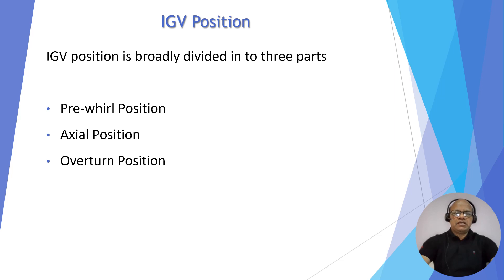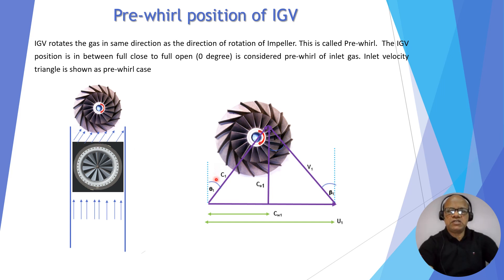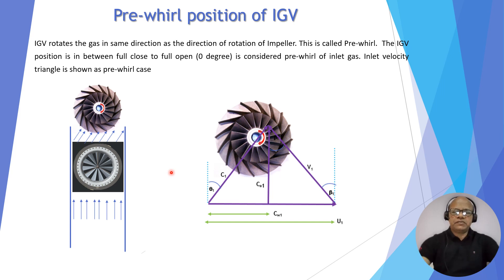IGV position is broadly divided into three parts: pre-whirl position, axial position, and overturned position. In the case of IGV in pre-whirl condition, the gas is turned in the same direction as the direction of rotation of the impeller. You can see the velocity triangle: C1, U1, V1, whirl component CW1, and axial component CA1. This is the pre-whirl inlet velocity triangle. The range from full close to full open position in between is called the pre-whirl position of IGV.